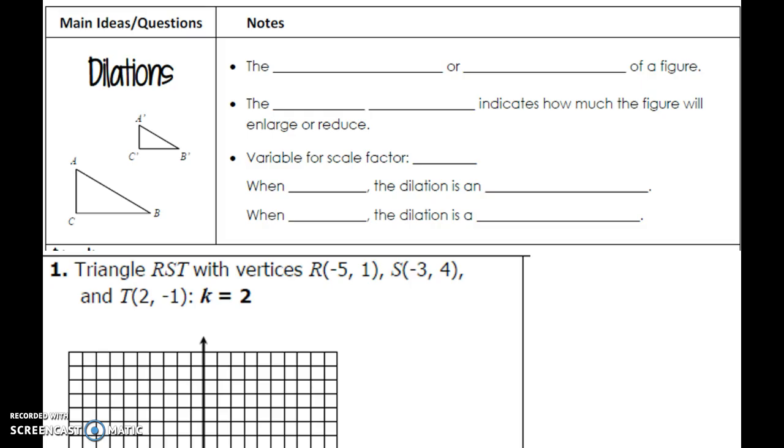Let's fill out a few of the notes. So with dilations, we're talking about the reduction or enlargement of a figure. The scale factor indicates how much the figure will change from our last little discussion. And then we need a variable. This assignment is going to use the variable k. So k is going to tell you how large to make something or how small to make something.